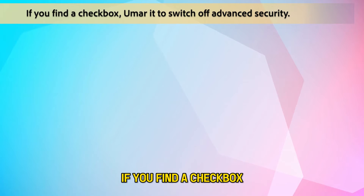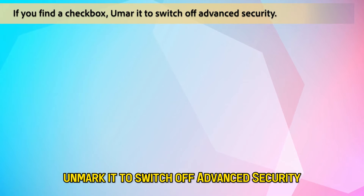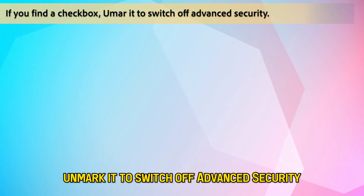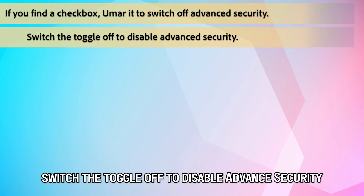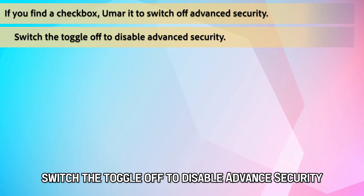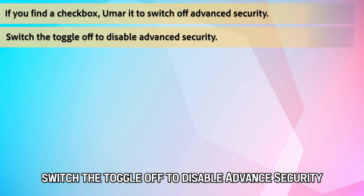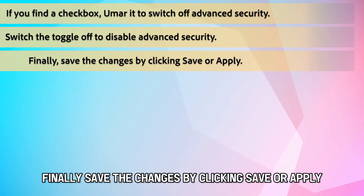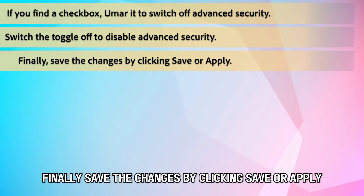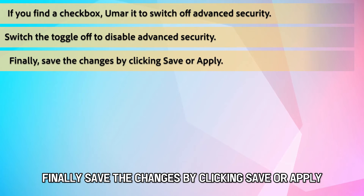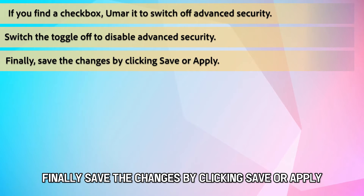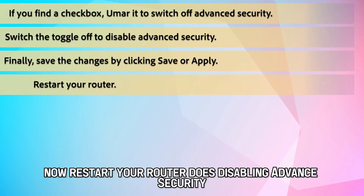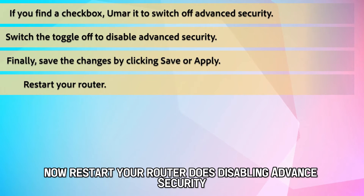If you find a checkbox, unmark it to switch off advanced security. Switch the toggle off to disable advanced security. Finally, save the changes by clicking Save or Apply. Now restart your router.